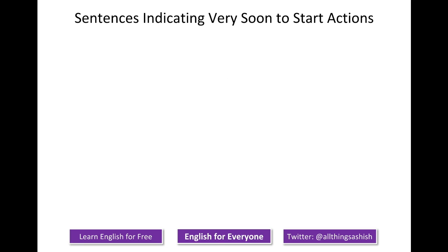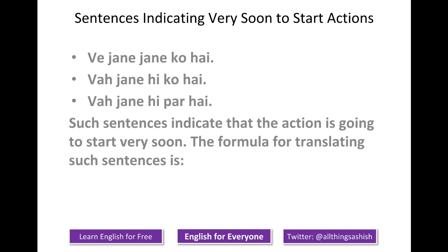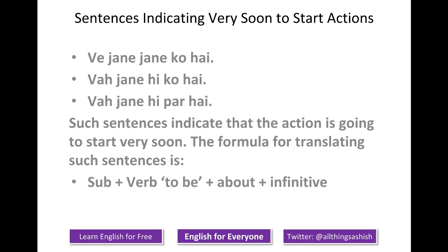Let's look at sentences indicating very soon to start actions. 'Ve jaane jaane ko hai.' 'Va jaane ko hi hai.' 'Va jaane hi par hai.' Such sentences indicate that the action is going to start very soon. The formula for translating such sentences is: subject plus verb to be plus 'about' plus infinitive. For example: he is about to go.